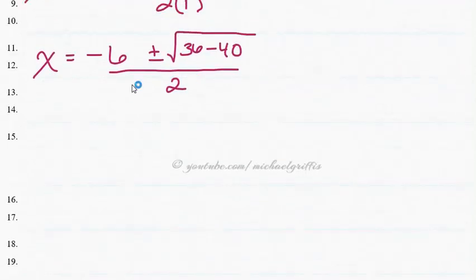Okay, I went a little too far on that one. So we have x is equal to negative 6 plus or minus the square root—all right, 36 minus 40 is going to be negative 4. Is that right? Negative 4. I guess so.